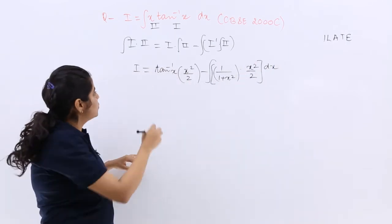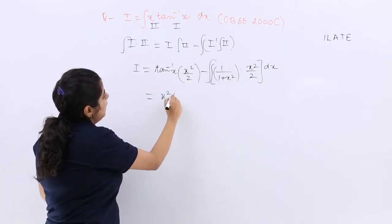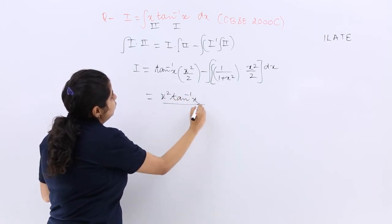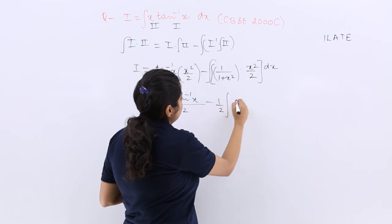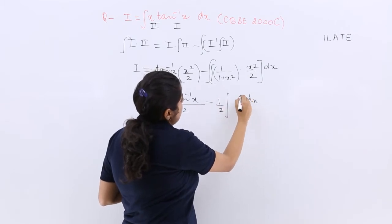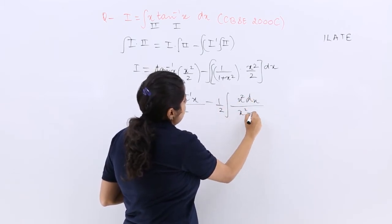Now see how to do it. It is x square tan inverse x by 2 minus 1 by 2 outside x square dx upon x square plus 1.